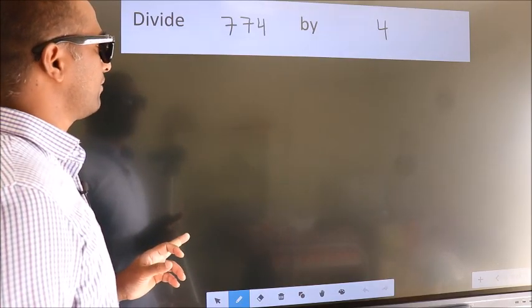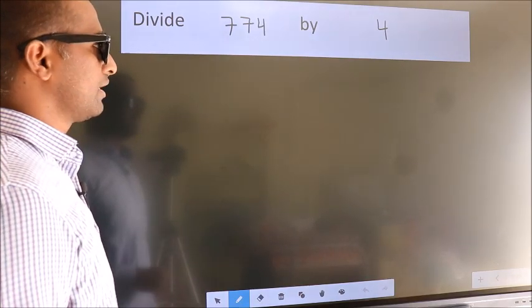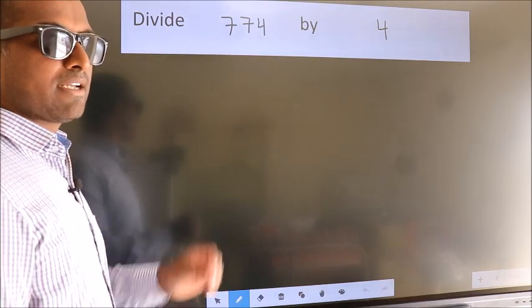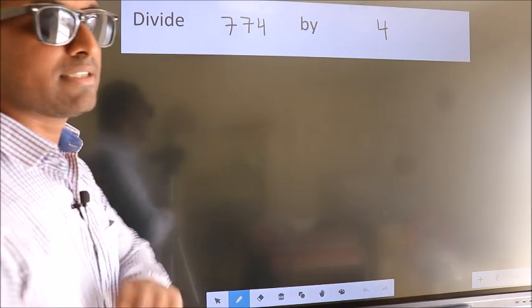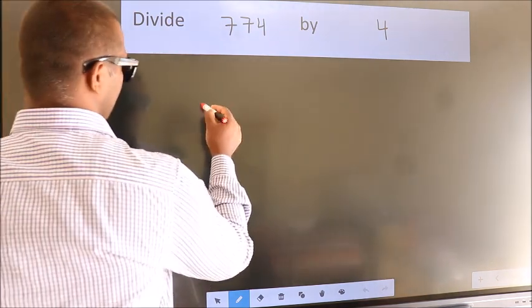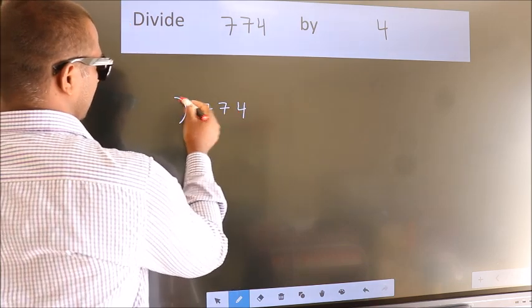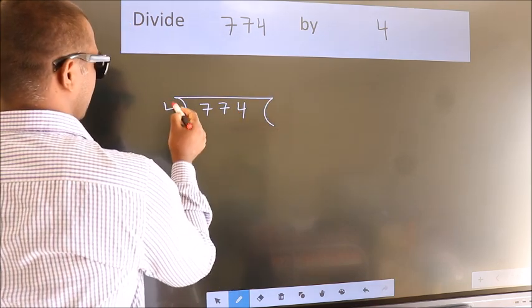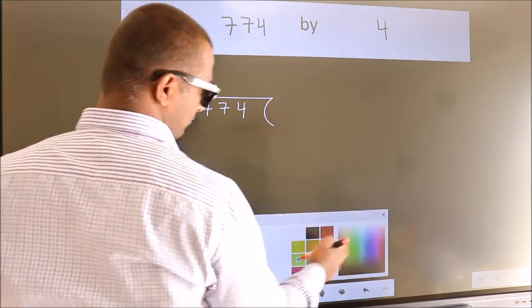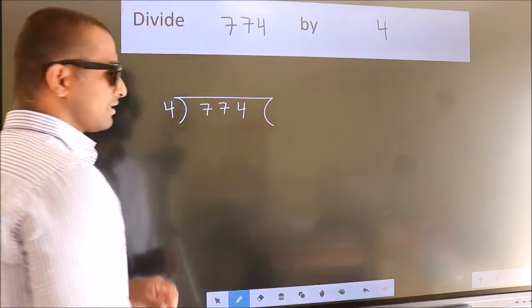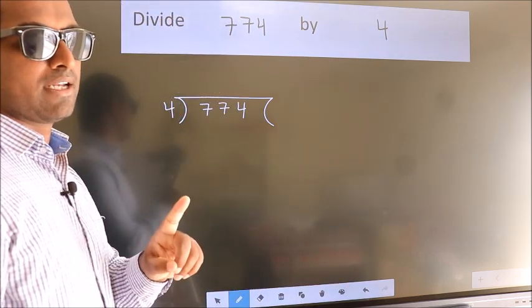Divide 774 by 4. To do this division, we should frame it in this way: 774 here, 4 here. This is your step 1.